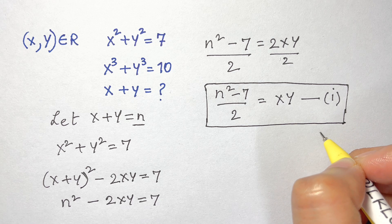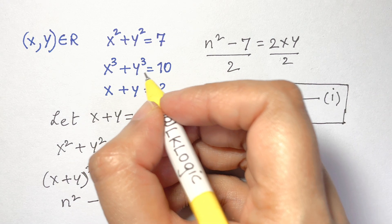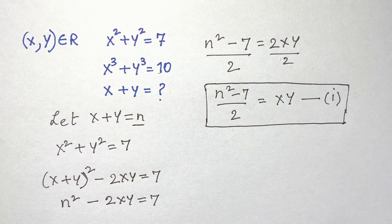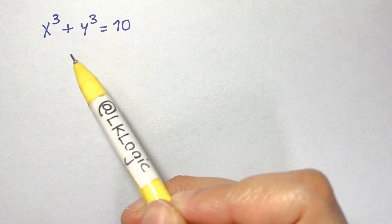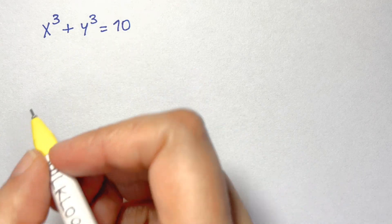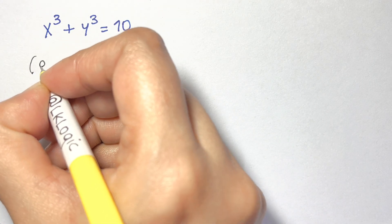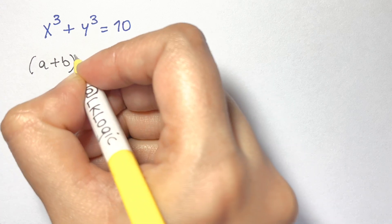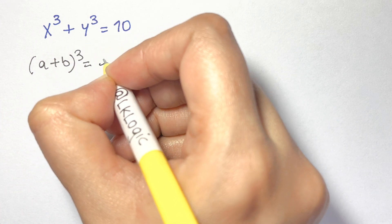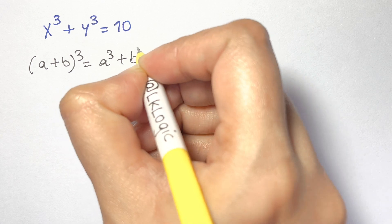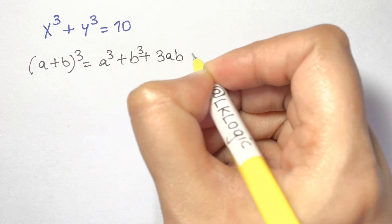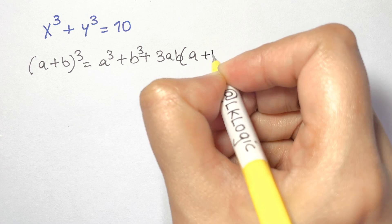Now we're going to solve further using x cubed plus y cubed equals 10. We expand x cubed plus y cubed using the identity: a plus b cubed equals a cubed plus b cubed plus 3ab times a plus b.